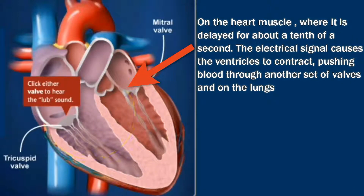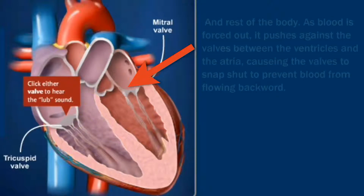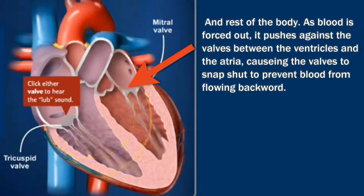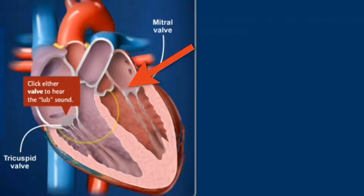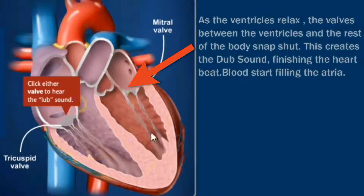Blood exits the ventricles — the electrical signal causes the ventricles to contract, pushing blood through another set of valves and on to the lungs and the rest of the body. As blood is forced out, it pushes against the valves between the ventricles and the atria, causing the valves to snap shut to prevent blood from flowing backward. This creates the 'lub' sound of the heartbeat.